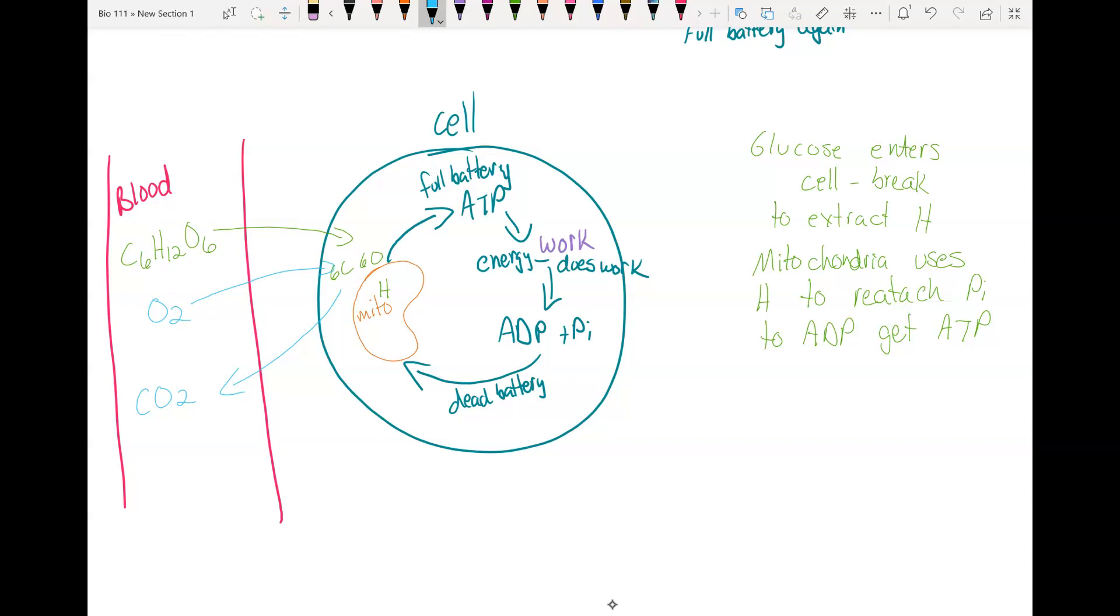The carbon dioxide that you're exhaling starts as glucose and oxygen in your blood. The glucose and oxygen go into your cell. You break the glucose down and get the hydrogen out. You use the hydrogen to make ATP. Then the oxygen combines with the carbon and oxygen from the glucose and makes carbon dioxide. That carbon dioxide goes from your cell back to your blood. Your blood takes it to your lungs, where your lungs exhale it.